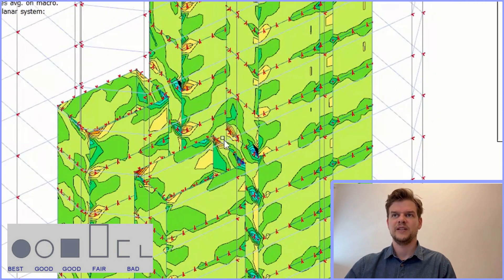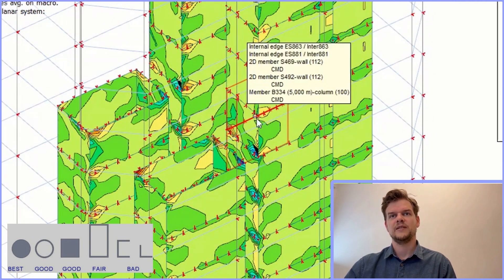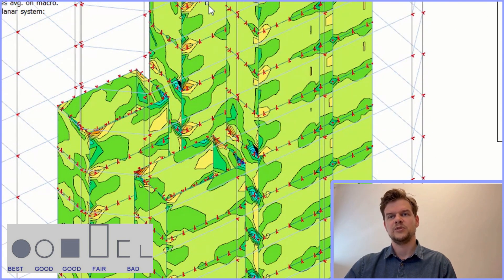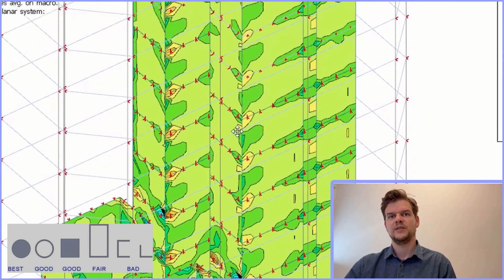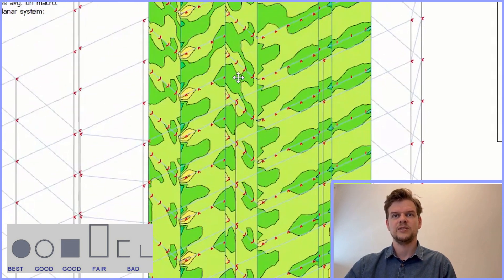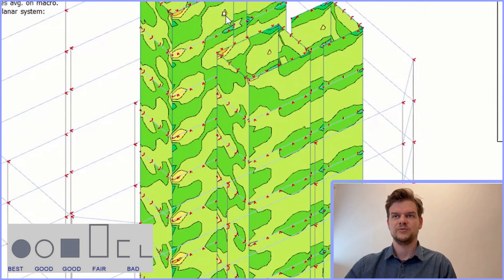But keep in mind, the actual torsional moments in reality would likely be even higher than in my model. Why? Because my model uses two closed profiles in one U shape, while the real core, as seen in the previous scenes, has many openings, which makes it far less effective in resisting torsion.